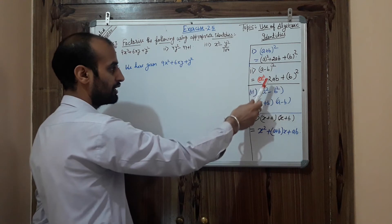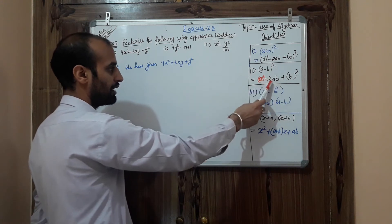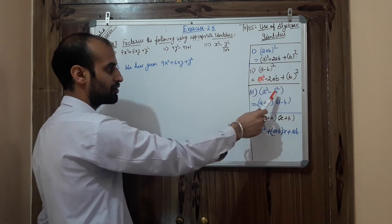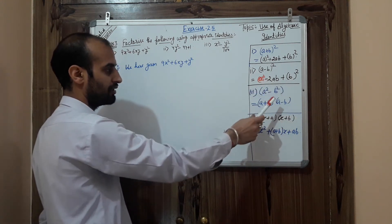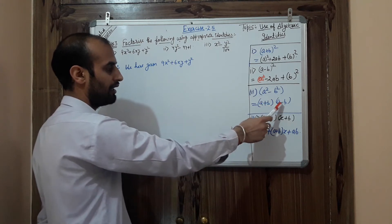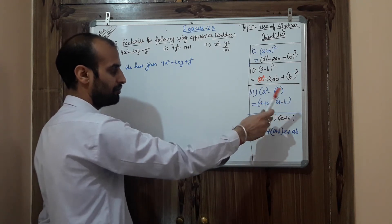The second identity: (a − b)² = a² − 2ab + b². The third identity: a² − b² = (a + b)(a − b).